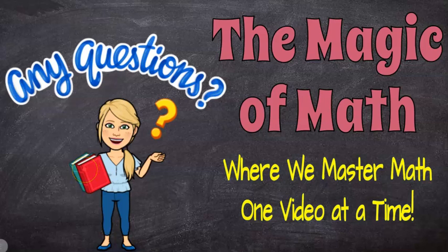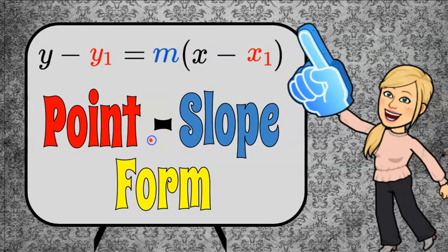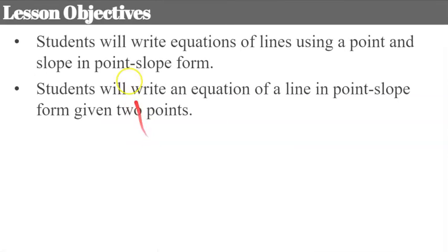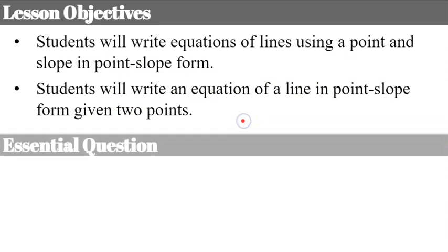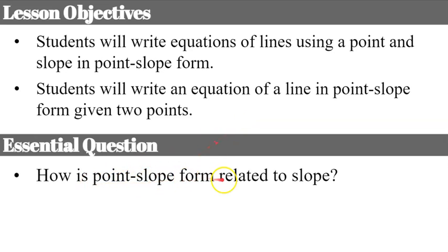Welcome to the Magic of Math where we master math one video at a time. Today we are going to write equations in point slope form. Your objectives are to write equations of lines using a point and a slope in point slope form, and to write an equation of a line in point slope form when given two points. The question to think about is: how is point slope form related to slope?